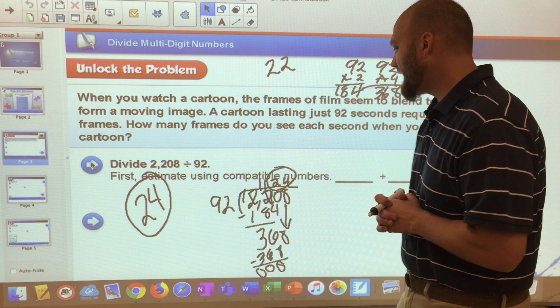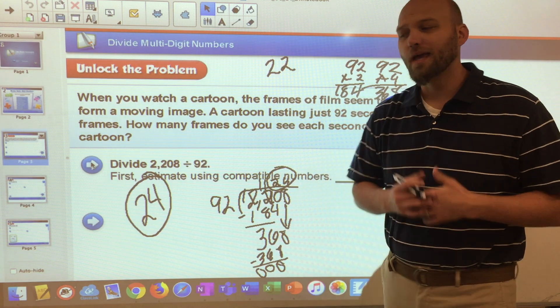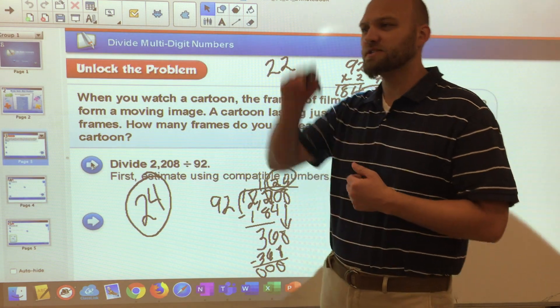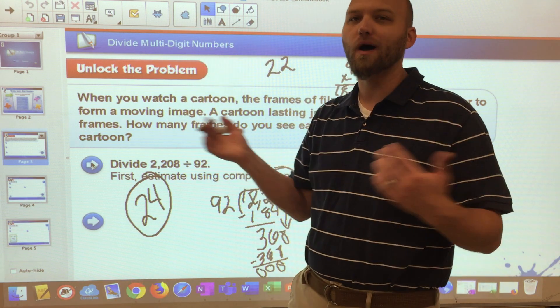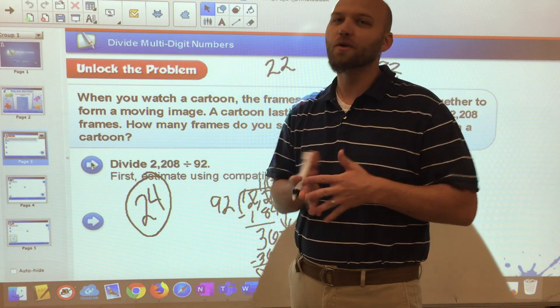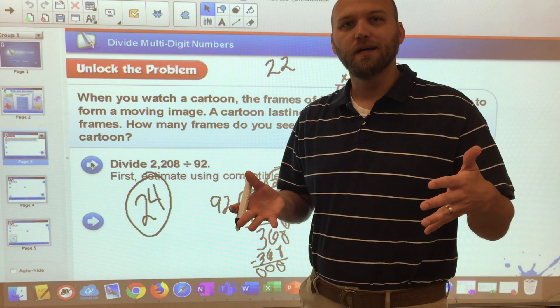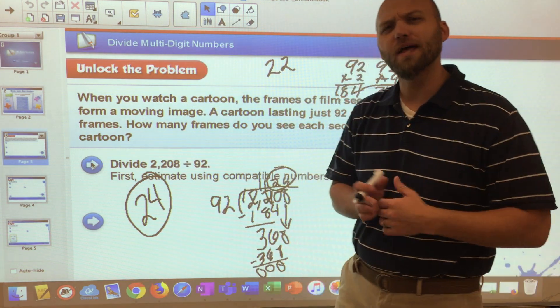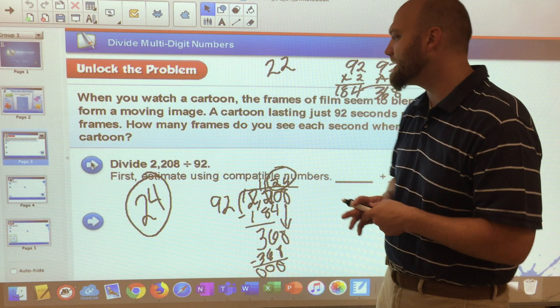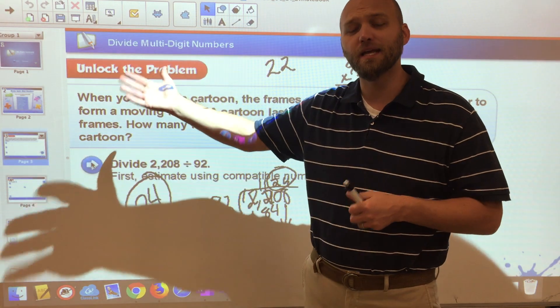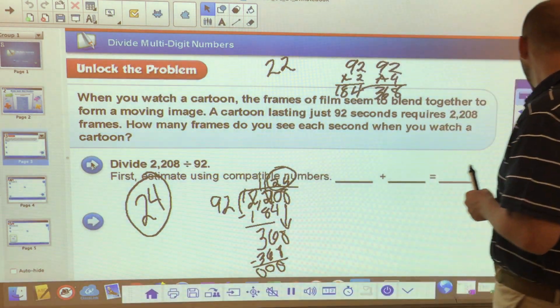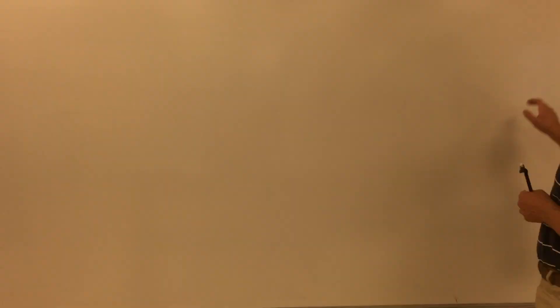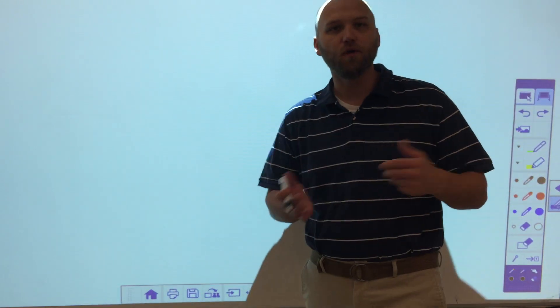Now, what would happen if I had a remainder? In the past, you've put just an R, like remainder 1. Basically, you get to a point where you can't take any more whole numbers out. And so you just say, well, I have this many leftover. It's a remainder. We're not going to do that this year. We're going to focus on taking that remainder and we're going to make it into a fraction.